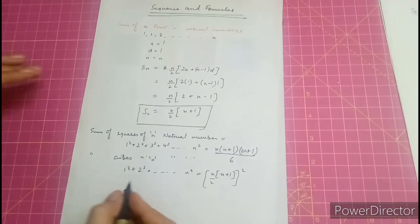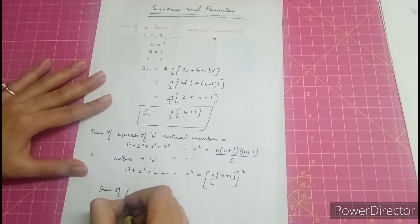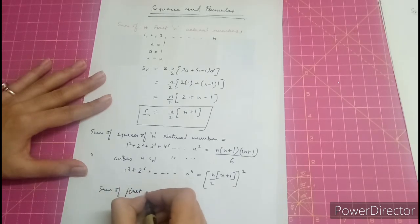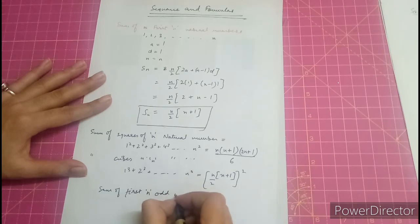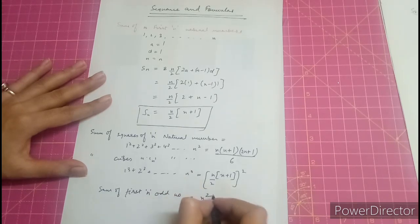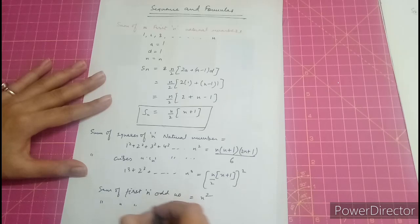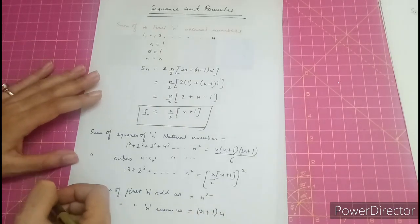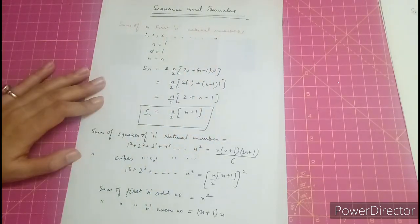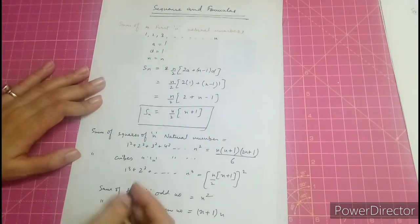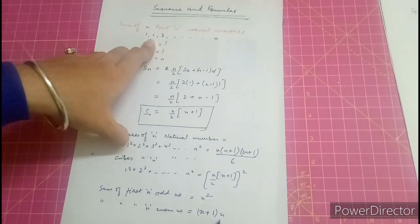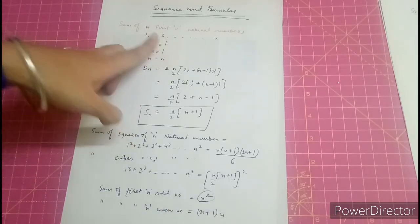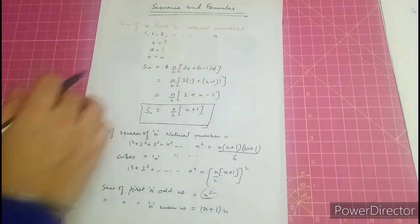Sum of first n odd numbers is n squared. Sum of first n even numbers is n(n+1). We are talking about these series — if you find the sum of even numbers it will be this, and for odd numbers it will be that.